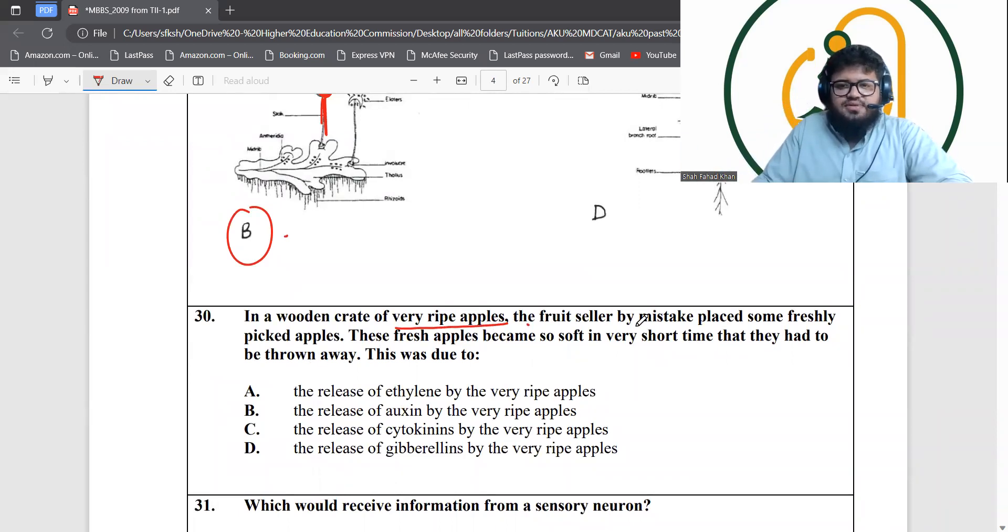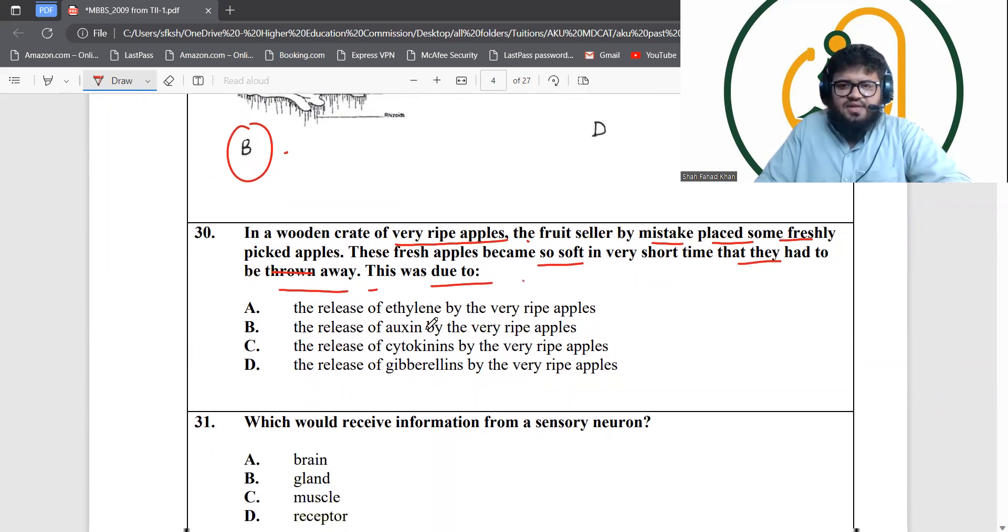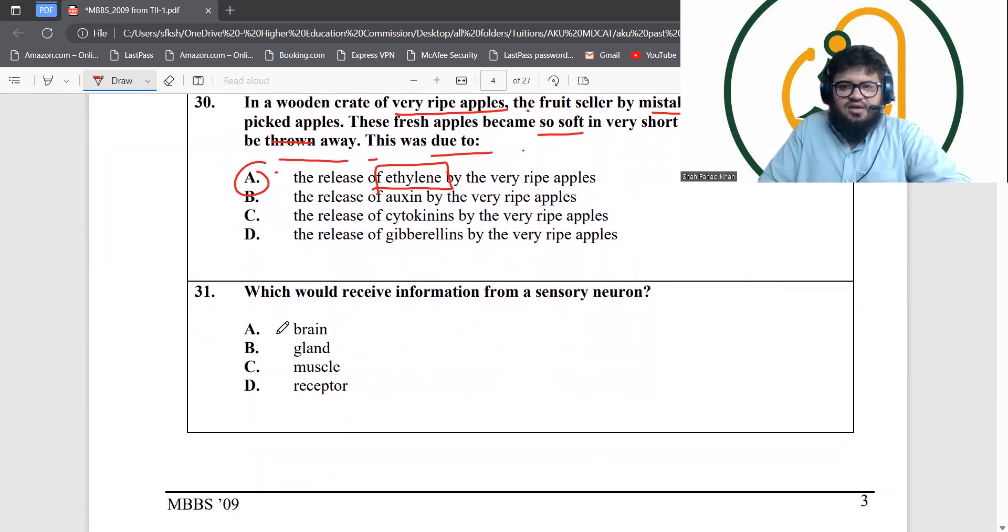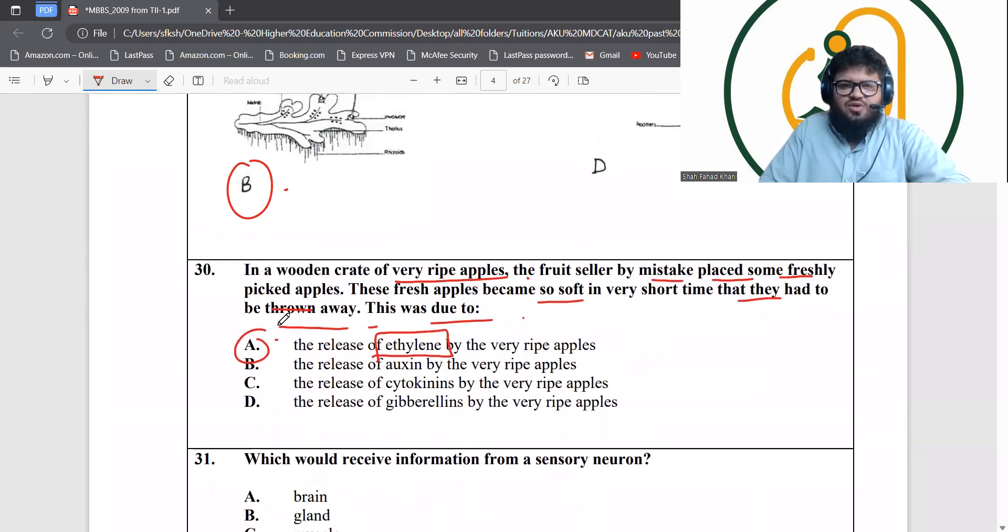Number 30: in a wooden crate of very ripe apples, the fruit seller by mistake placed some freshly picked apples. The fresh apples became so soft in a very short time that they had to be thrown away. Why? Now, ripening is a process that occurs due to plant hormones, and the plant hormone that does this is ethylene. That's the answer. The release of ethylene does that.